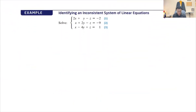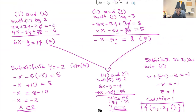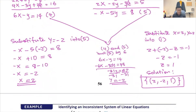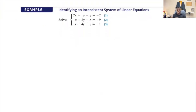Now let's see this second example, where we have a system. When you have a problem, you're not going to be told what type of system it is. But in this case, I'm showing you situations based on cases, so I want you to understand when each case is in front of you. In this case, you're going to be solving a system of three equations in three variables that is inconsistent.